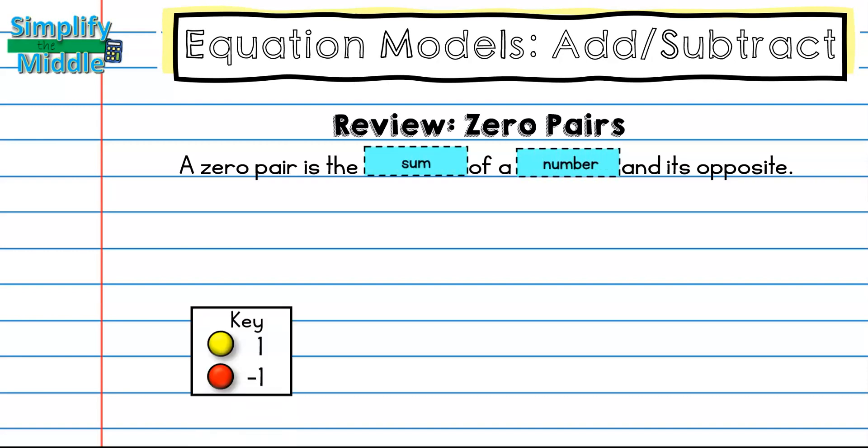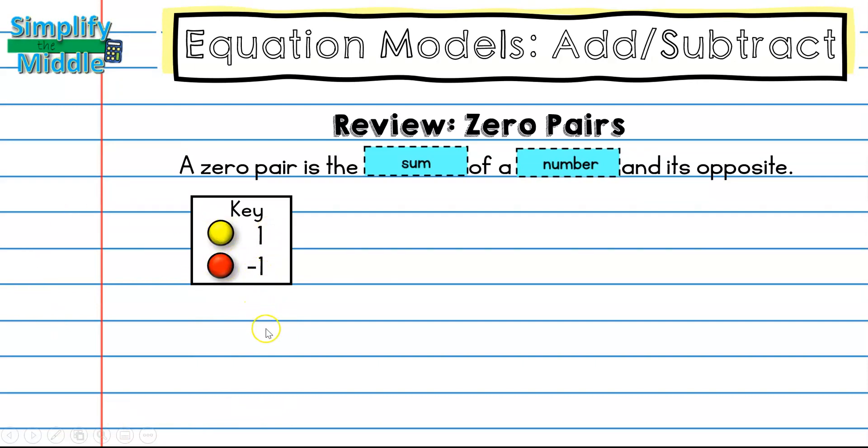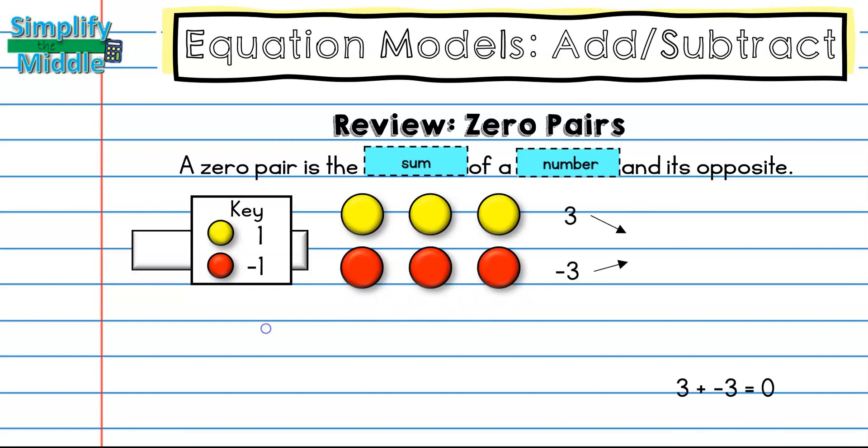If we had this key right here, we see yellow represents positive one, red represents negative one. So if we had three positive ones, we have positive three here. In order to eliminate that, we would need to add three negative ones because this makes a zero pair, which this statement becomes three plus negative three, which is just zero.